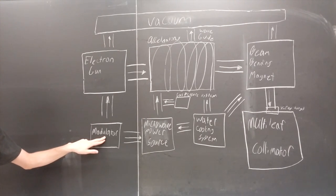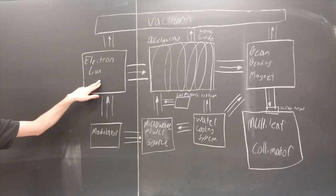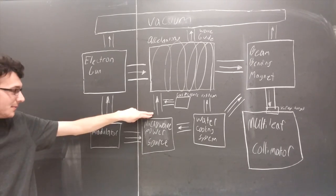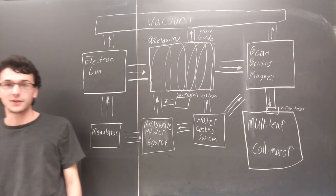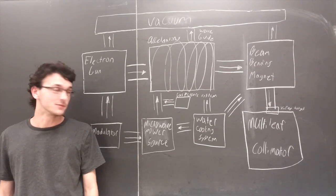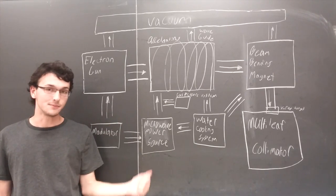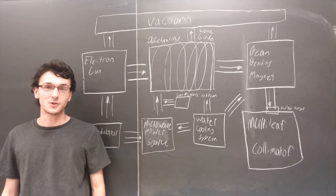Here we have the modulator, which regulates the amount of energy produced by both the electron gun and the microwave power source. It is important to note that we are able to exchange the mediums within the system. That will become important in the equations portion later.